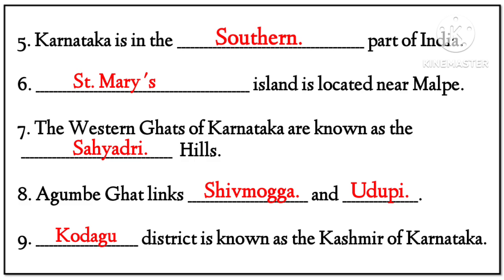Sixth: St. Mary's Island is located near Malpe. Seventh: the western ghats of Karnataka are known as the Sahyadri Hills. Eighth: Agumbe Ghat links Shivamogga and Udupi. Ninth: Kodagu district is known as the Kashmir of Karnataka.